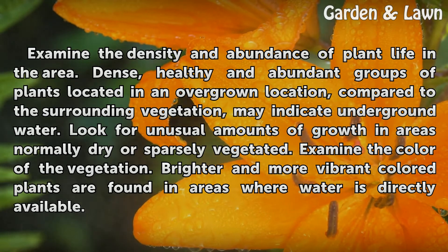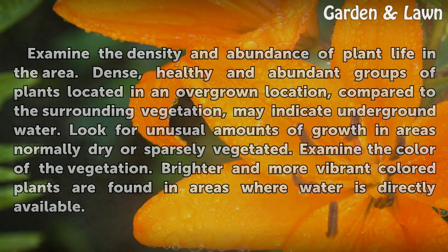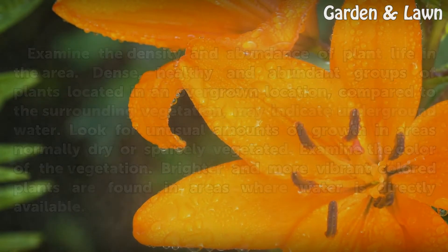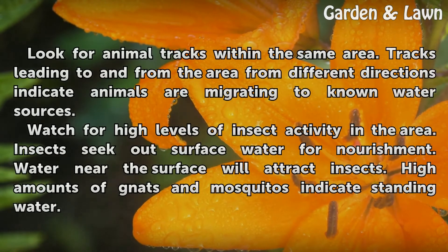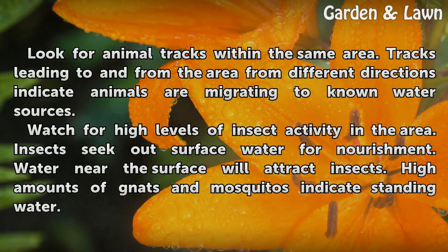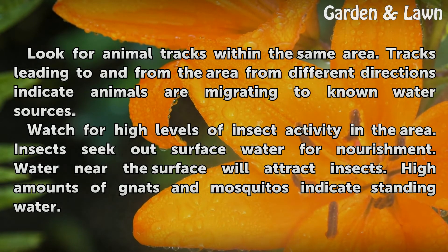Examine the color of the vegetation. Brighter and more vibrant colored plants are found in areas where water is directly available. Look for animal tracks within the same area. Tracks leading to and from the area from different directions indicate animals are migrating to known water sources.